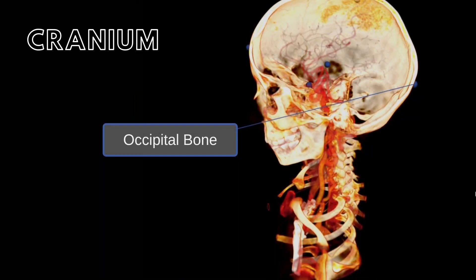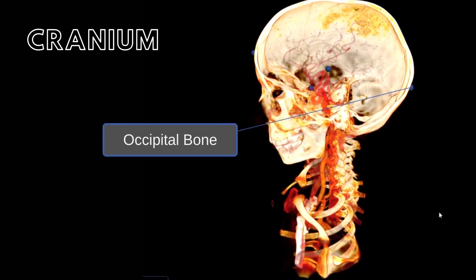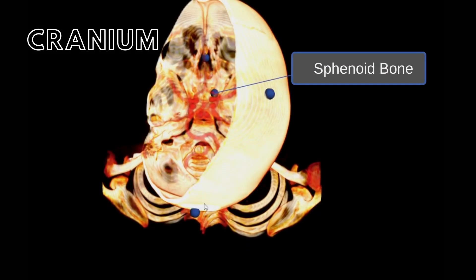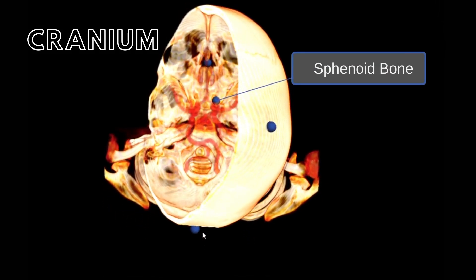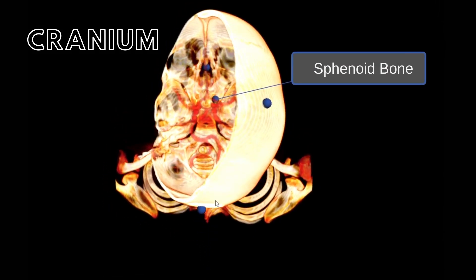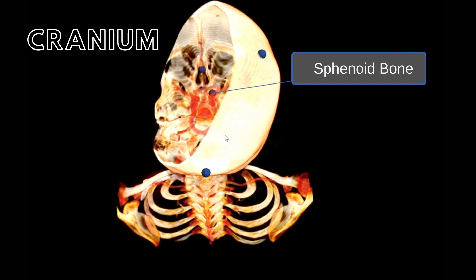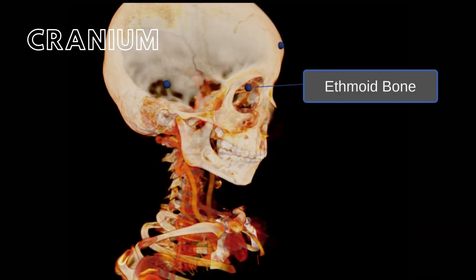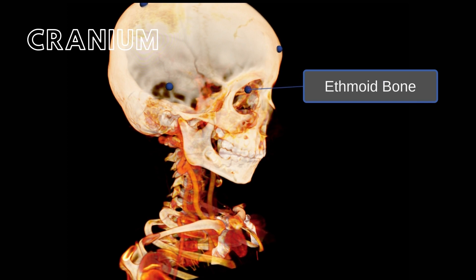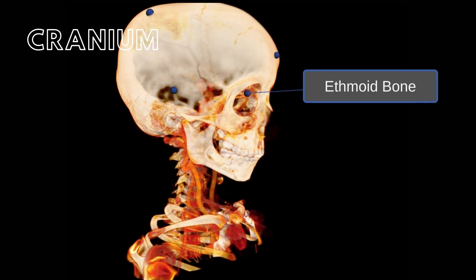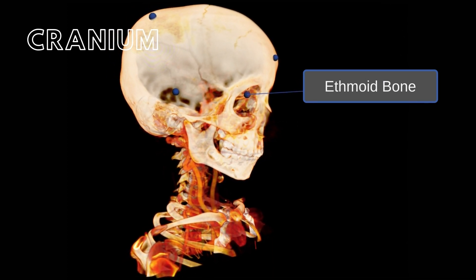The occipital bone forms the back and base of the skull. The sphenoid bone sits behind the eye and below the front of the brain, forming part of the cranial floor and sitting in the center of the skull. The ethmoid bone sits at the root of the nose between the eyes, is square in shape, and has many perforations through which nerves pass to the nose.